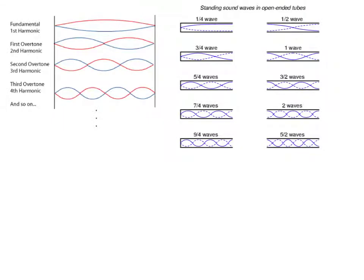Now we're going to derive equations for different types of strings and pipes and when standing waves can actually form — because standing waves don't form at any point in time. There are actual set rules for when they're allowed to form. For a closed-on-both-ends pipe or string, you have to have nodes on each end, because it's closed on both sides.